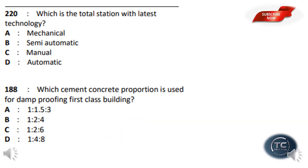Which is the total station with the latest technology? The options are: Mechanical, Semi-Automatic, Manual, Automatic. Option D is Automatic — this is the latest technology in total stations.